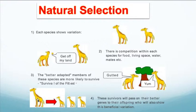All organisms have the genetic potential to increase their populations. Looking at this diagram of natural selection, each species shows variation — you have two giraffes here, one a little shorter, one a little taller. The better adapted members are more likely to survive, right — survival of the fittest. There's competition within each species for food, living space, and water, and the one with better fitness will have an advantage in getting food, living space, water, or a mate. These survivors will pass on their better genes to their offspring, who will also show this beneficial variation.